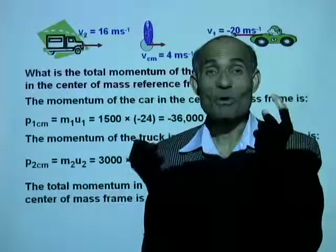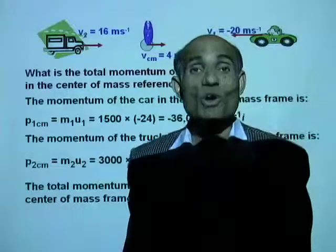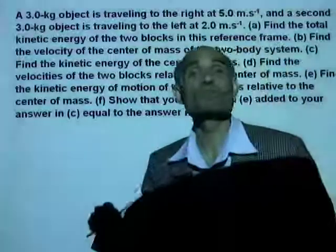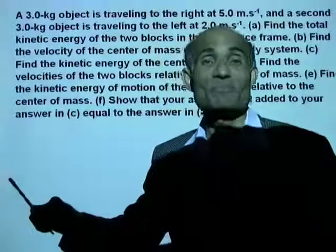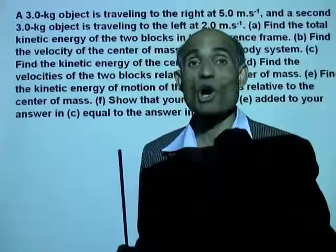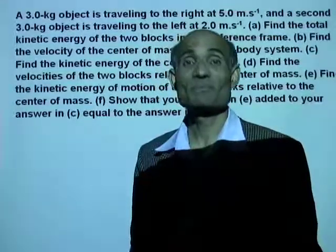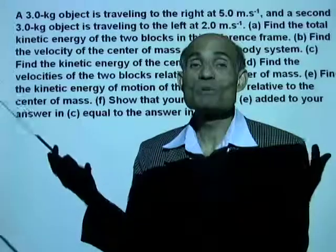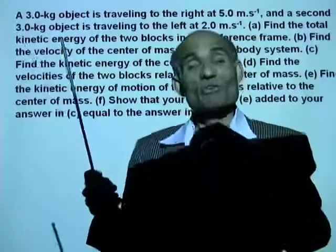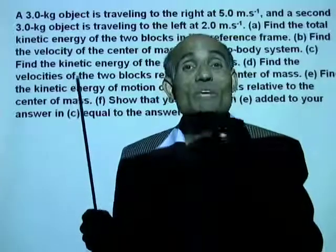That means if you have a system of objects in motion, and you measure the velocities of all the objects from the center of mass reference frame and calculate their total momentum, the total momentum calculated from the center of mass reference frame will be zero. Therefore, the center of mass reference frame is also called the zero momentum reference frame - because the total momentum of all objects measured from the center of mass reference frame will be zero.